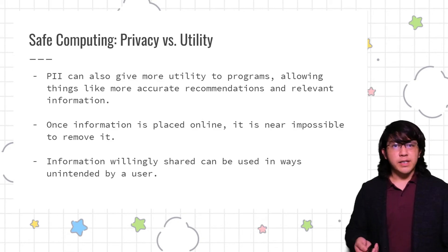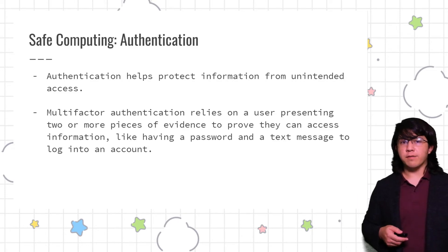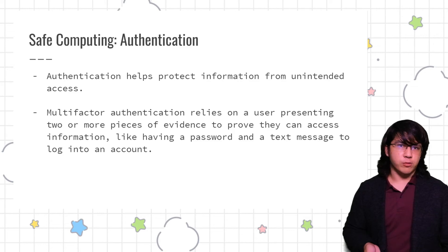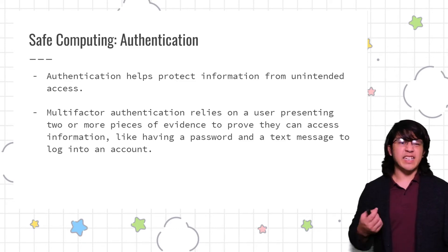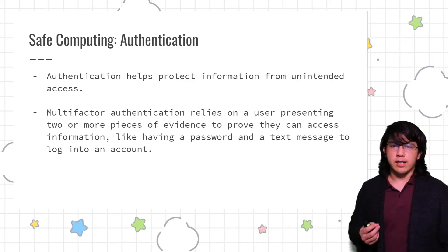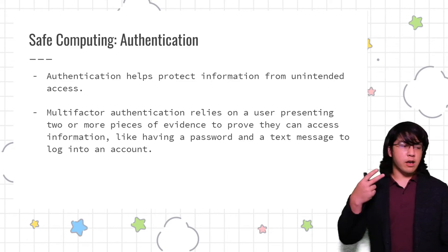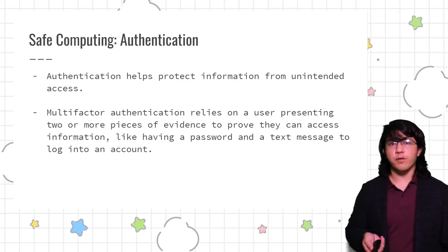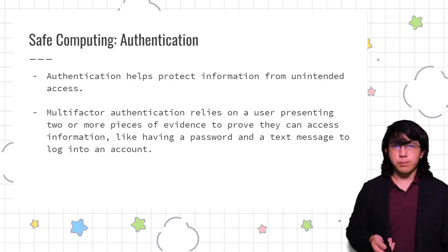Even things you willingly share can be taken out of context — you post something on a social network and it can be shared by other users. One way to help protect your data is through authentication. Authentication — things like using a password — makes sure that information like a bank account or social media account is only accessed by the intended recipient, usually just you. Beyond just a password, you should strive to use multi-factor authentication, where you use two or more forms of information that prove it's you: knowing a password, receiving a text message on a phone you're holding, having a dedicated device, using geolocation so you can only access a site from a specific physical location, or biometric data like a thumbprint or face scan.